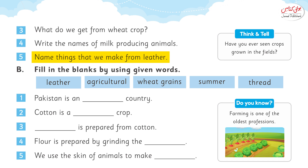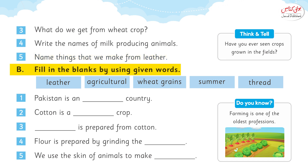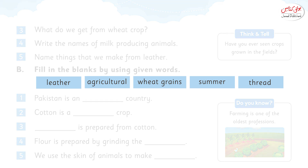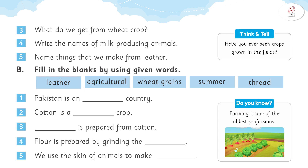Your last question: name the things that we make from leather. Leather is used to make many things like coats, bags, shoes, etc. Moving on to the next question: fill in the blanks using given words. On page number 47 they have given you some words — leather, agricultural, wheat grains, summer, and thread. Number 1: Pakistan is an agricultural country. Cotton is a summer crop. Thread is prepared from cotton. Flour is prepared by grinding the wheat grains. We use the skin of animals to make leather.